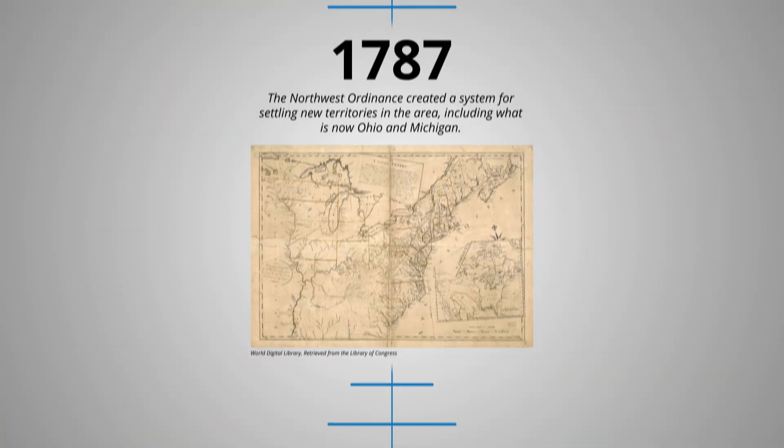This timeline starts with 1787. The Northwest Ordinance created a system for settling new territories in the area, including what is now Ohio and Michigan.